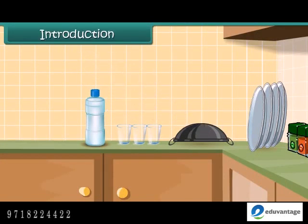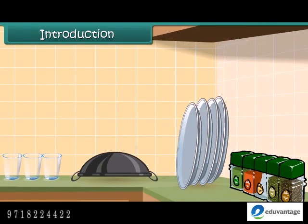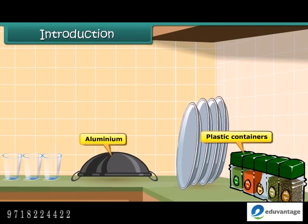Your kitchen shelves must be neatly arranged with rows of food containers, mostly made up of plastics. Plastics have taken so much prominence in our lives, now that we have replaced materials like aluminium, iron, steel and glass with plastics. So, let us find out more about plastics in this lesson, where you will study about the general properties of plastics and their importance in our everyday lives.